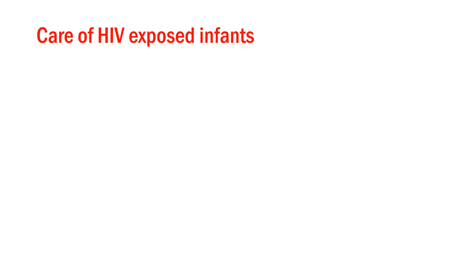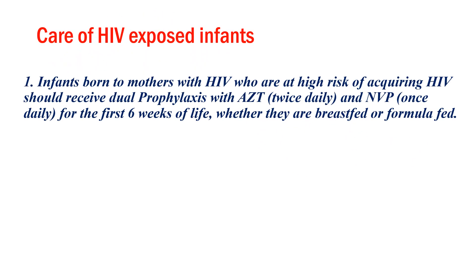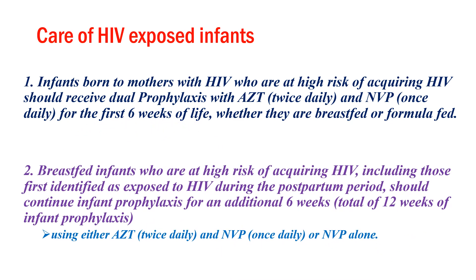For care of HIV-exposed infants, infants born to mothers with HIV who are at high risk of acquiring HIV should receive dual prophylaxis with AZT and Nevirapine for the first six weeks of life, whether breastfed or formula-fed. Breastfed infants at high risk of acquiring HIV, including those first identified as exposed to HIV during the postpartum period, should continue infant prophylaxis for an additional six weeks, for a total of 12 weeks of infant prophylaxis.